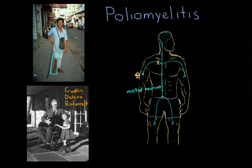Another prominent historical figure diagnosed with polio was Franklin Delano Roosevelt, FDR, the 32nd President of the United States. He was infected in 1921, which left him permanently damaged from the waist down. Interestingly, FDR didn't want to show the general public his ailment, so there are very few pictures of him in a wheelchair.